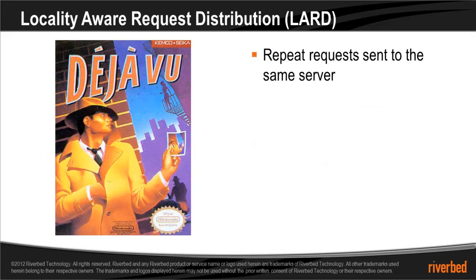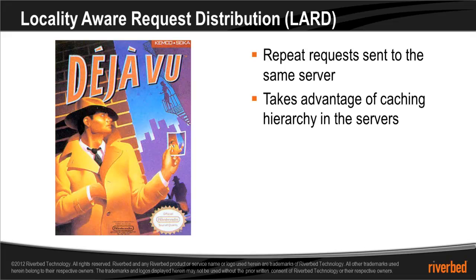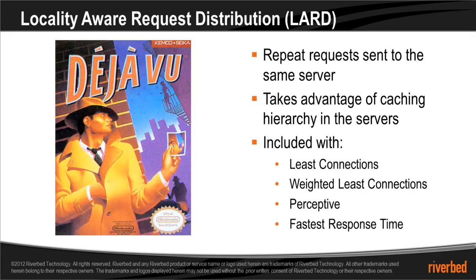Stingray will tend to send repeat requests for content to the same server it sent them to before. This is done to take advantage of cache hierarchy principles — any data, be it a web page or an image that has been recently accessed by a server, will likely still be in its cache or main memory and not have to be fetched from disk. Locality-aware request distribution is automatically included with least connections, weighted least connections, perceptive, and fastest response time algorithms.